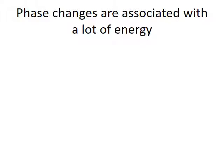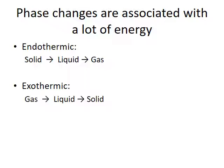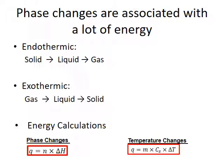To summarize, phase changes are associated with a lot of energy. Processes like melting and boiling require energy and are therefore endothermic. Processes like condensation and freezing actually release energy and are exothermic. We can calculate the energy associated with any phase and temperature change process by using a combination of two formulas. The energy for just the phase change must be calculated separately using the enthalpy value for that process. The energy associated with changing the temperature of a single phase must be calculated using the specific heat capacity formula.